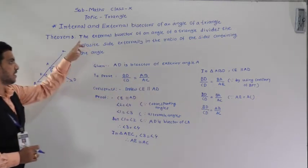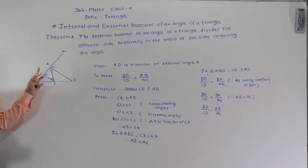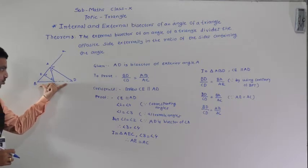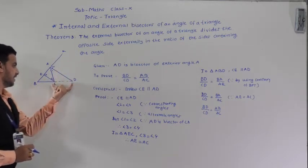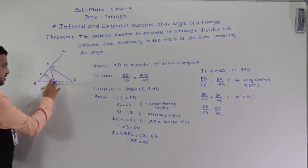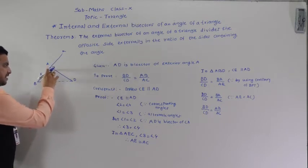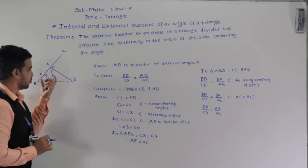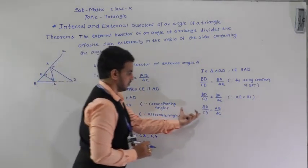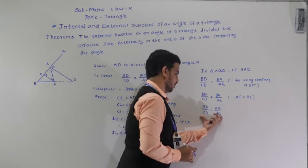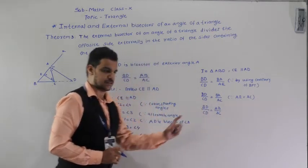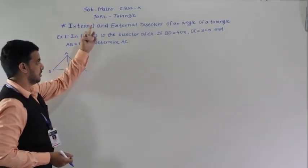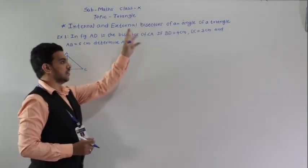So this is the external bisector of an angle of a triangle: it divides the opposite side externally in the ratio of the sides containing the angle. AB and AC are the two sides and we have shown that BD by CD equals AB by AC. Now we will see examples based on these internal and external bisector theorems.